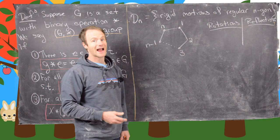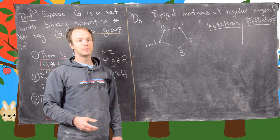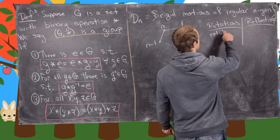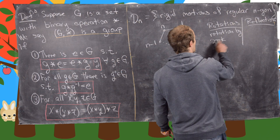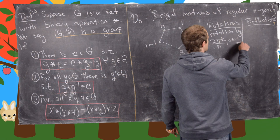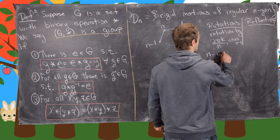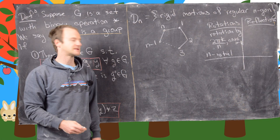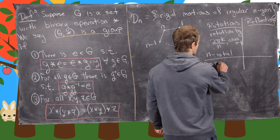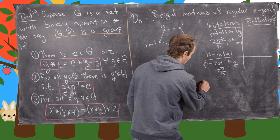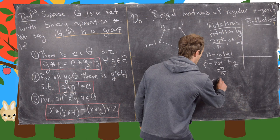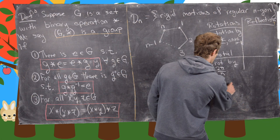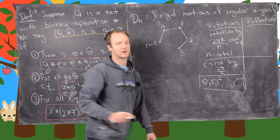How many rotations are there? There are exactly n. We can rotate by any multiple of 2π/n, so we have rotation by 2πk/n for k between 0 and n minus 1 — that's n total. If we let r equal rotation by 2π/n, then we have the identity (r to the 0), r, r squared (rotation by 2π·2/n), all the way up to r to the n minus 1. These are all of our rotations — just multiples of the simplest rotation.